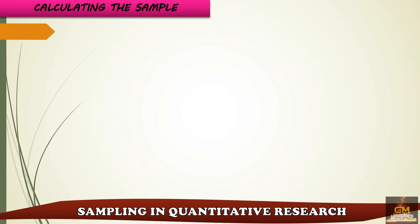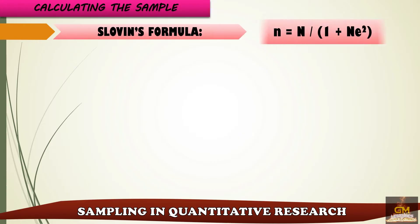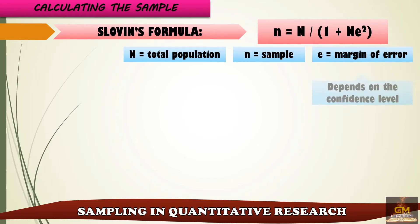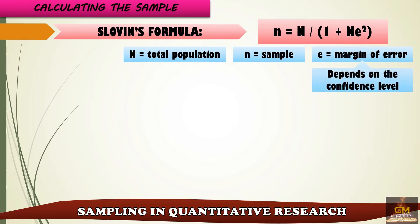One way to calculate the sample is by using Slovin's formula, where N equals the total population, the smaller n represents the sample, and e is the margin of error. Take note that the margin of error is dependent on the confidence level that we will be using.